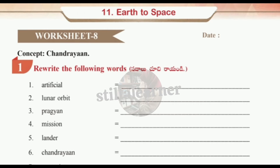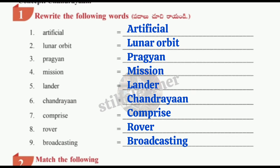Worksheet number eight: rewrite the following words — Artificial, Lunar Orbit, Pragyaan, Mission, Lander, Chandrayaan, Compress, Rover, and Broadcasting — starting each word with a capital letter.